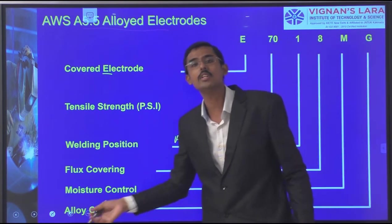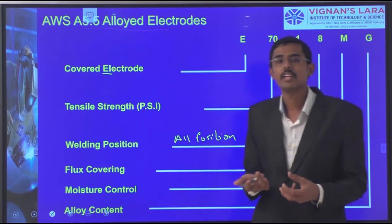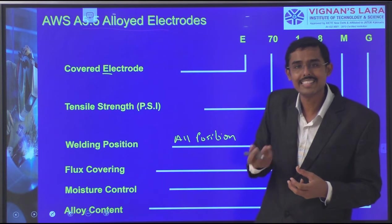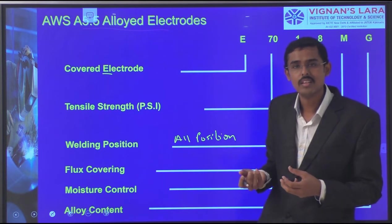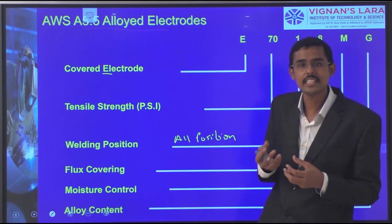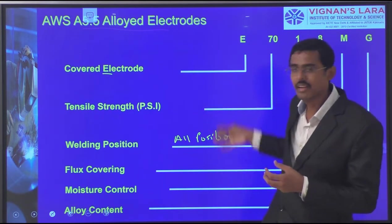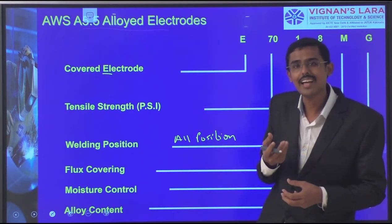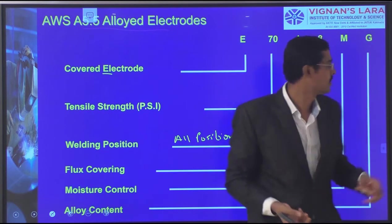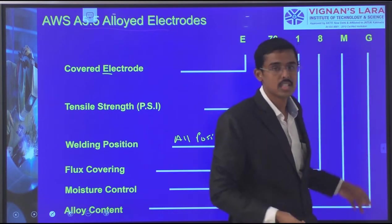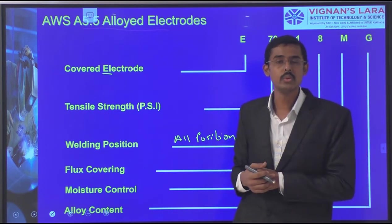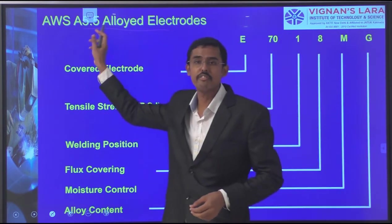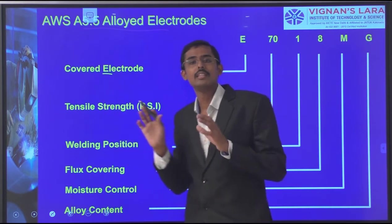'G' represents the alloy content — how much alloy is added for improvement of properties. We add some alloys for shielding gases. We have seen the tables showing how much of what alloys are added. Such combinations we can see in AWS A5.5 standards.